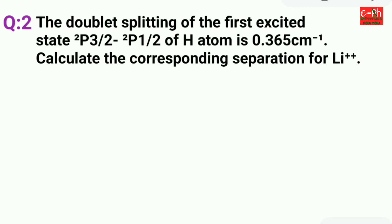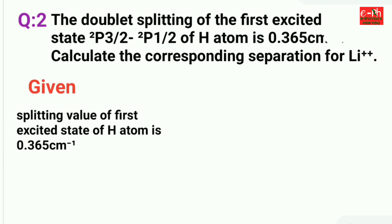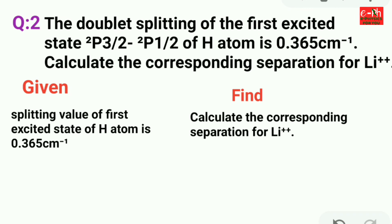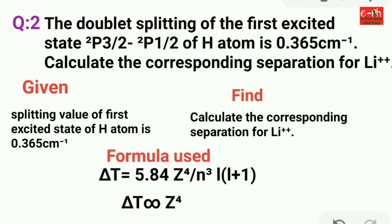To solve this problem, the given data is: the splitting value of the first excited state of hydrogen atom is 0.365 cm⁻¹. We need to find the corresponding separation for Li⁺⁺. The formula used is: ΔT = 5.84 × Z⁴ / (N³ × L(L+1)), where ΔT is the separation, Z is the atomic number, N is the principal quantum number, and L is the azimuthal quantum number.